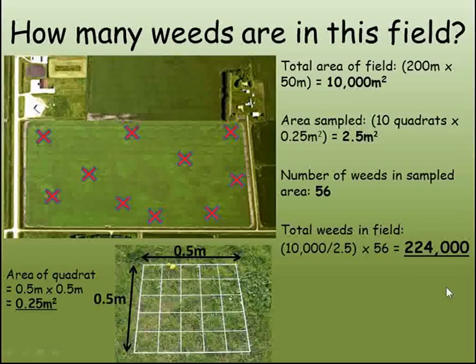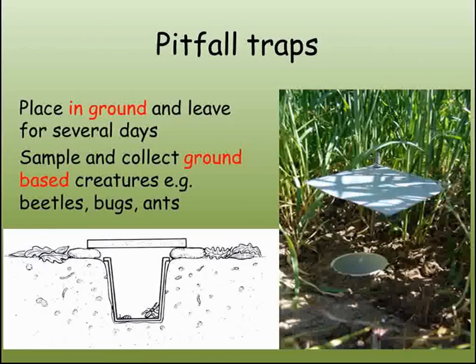If the scientist wanted to know about the distribution of small, crawling insects that are hard to find and observe, they would use a pitfall trap. This is a small cup sunk into the ground, usually with a rain cover on top, to stop the trap filling with water. These can be left in place for several days before they're collected and the animals inside identified and counted. You could use these traps to compare the types and number of animals living in different areas, or to see how their distribution changes as you move away from a landmark like a hedge or a river.